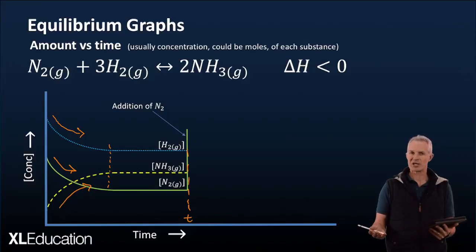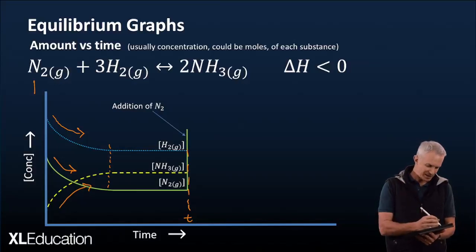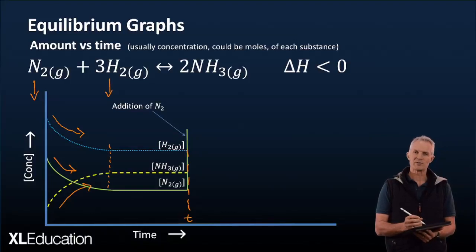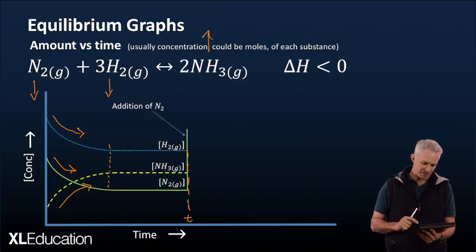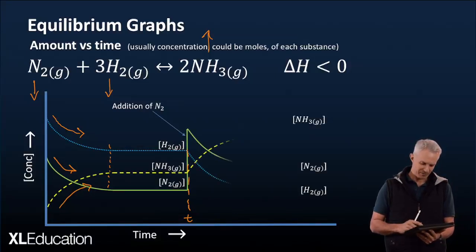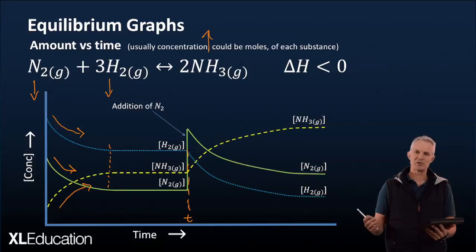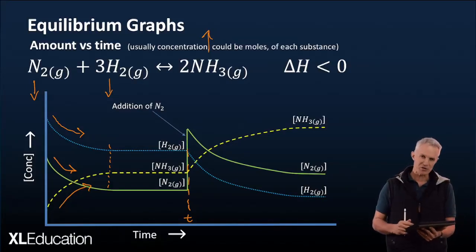According to Le Chatelier's principle, it's now going to try and bring that down again. So it will respond by bringing the green line down. As the green line goes down, the hydrogen has got to go with it, because the nitrogen and hydrogen will get used up together, and the ammonia will be produced. So we'll expect the blue line for hydrogen to go down, the green line to go down, and the yellow line to go up. And of course, that then rolls out and establishes a new equilibrium a little bit down the way. So that's a concentration graph with a change in concentration.